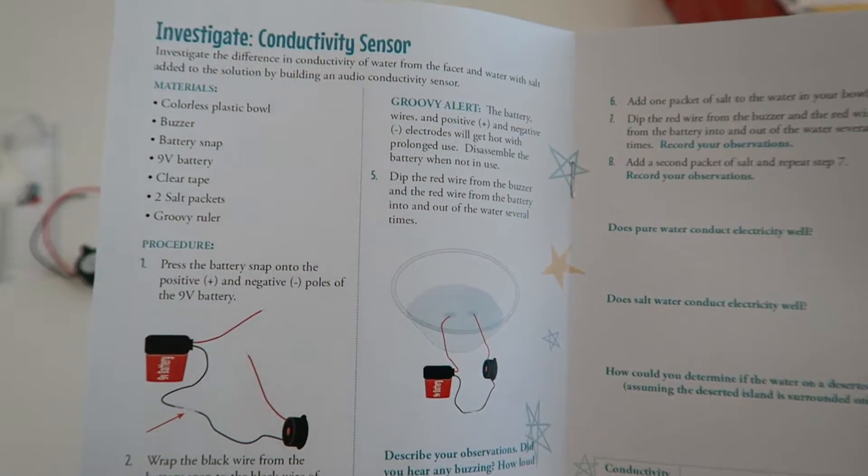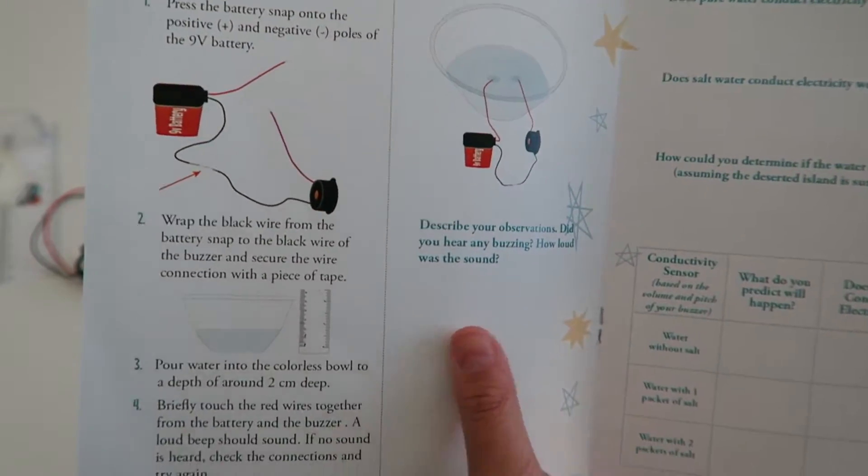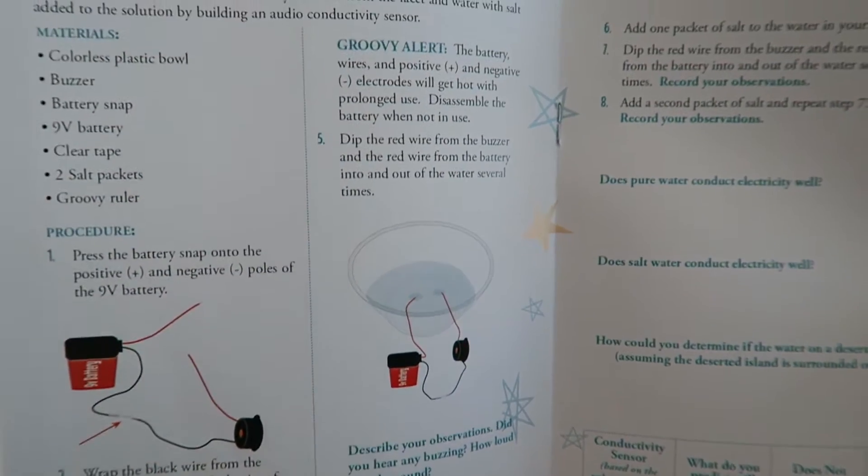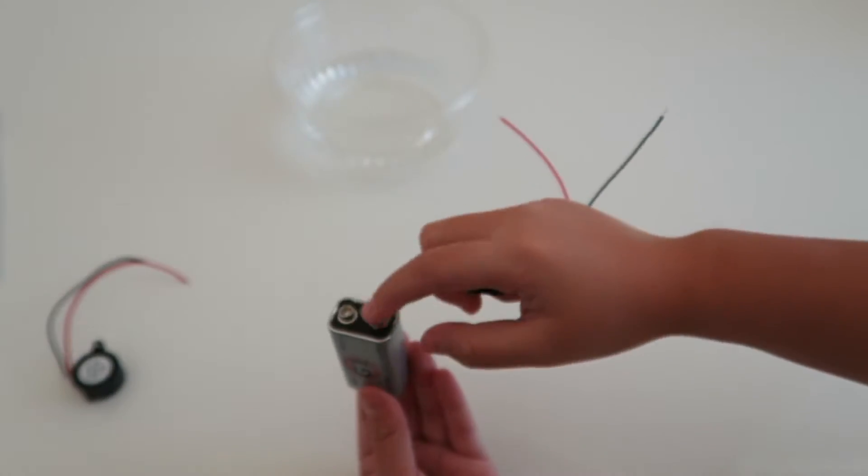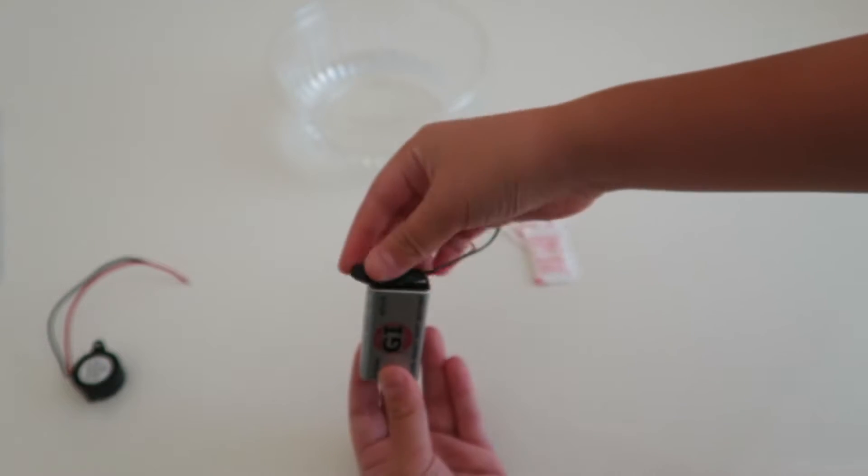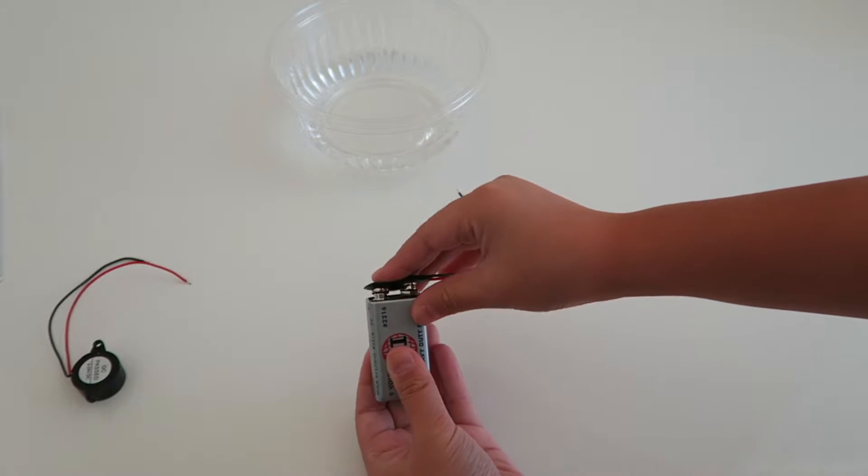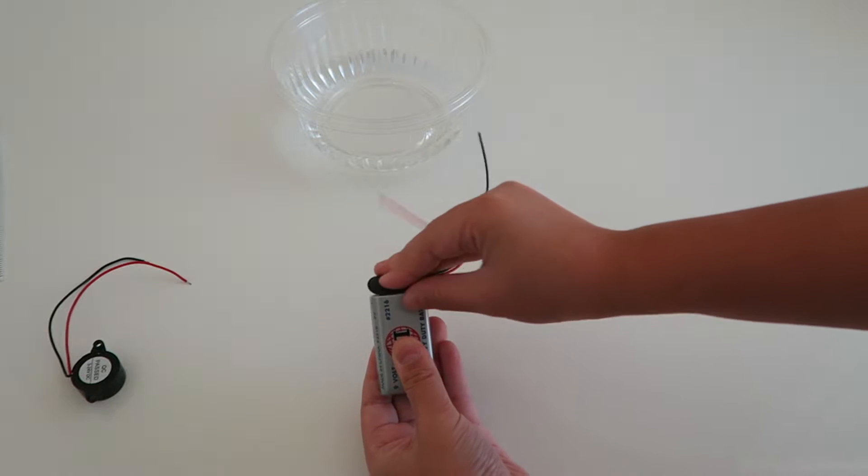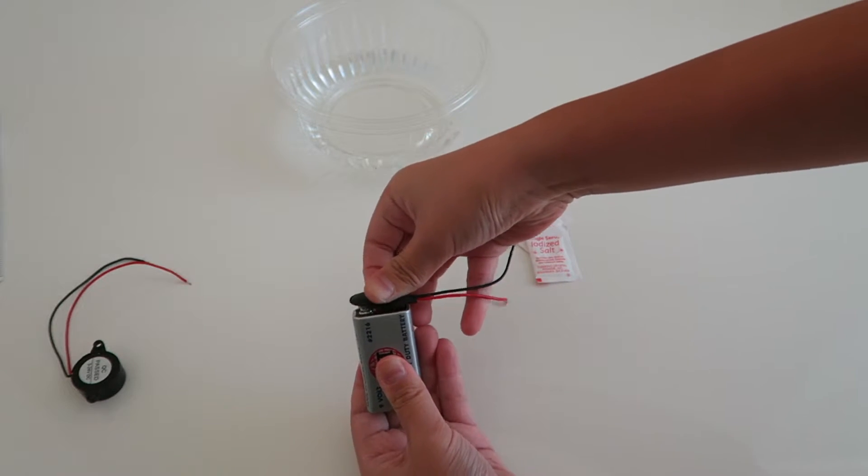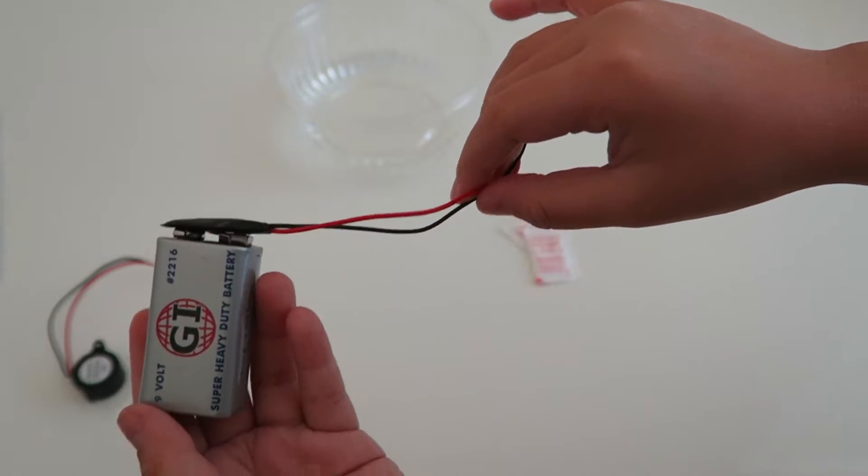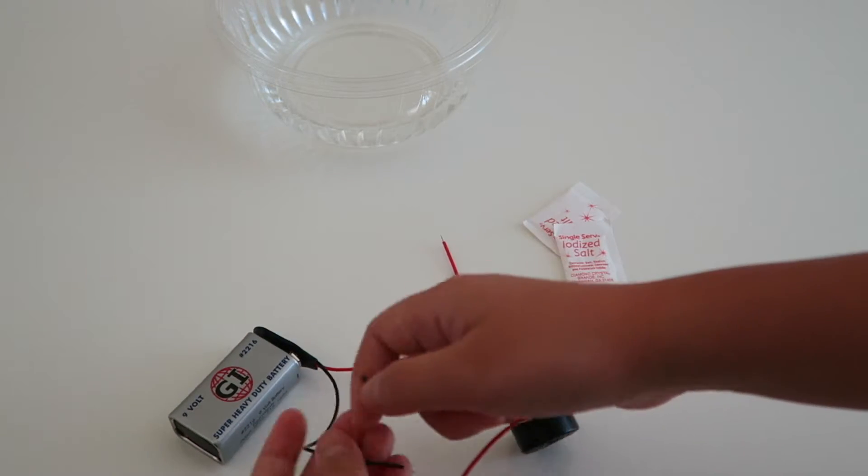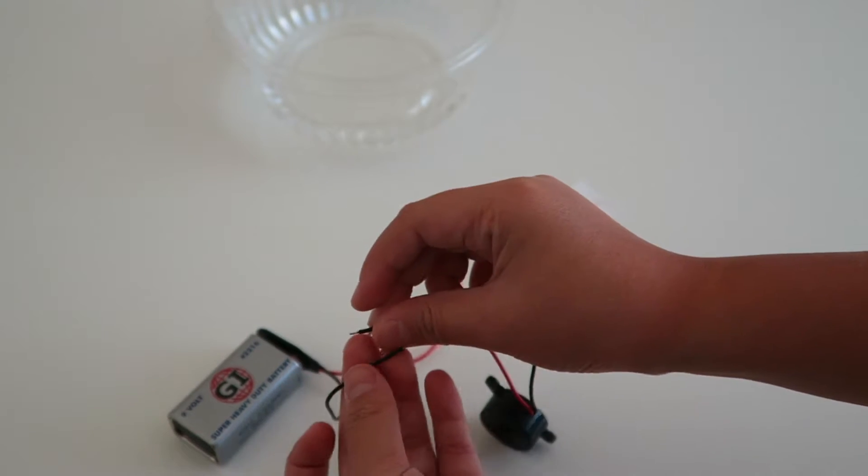We're going to try this experiment. The first thing we're going to do is snap this piece onto the battery. Snap this in. Okay, it's snapped in. So then you're going to tape these two together.